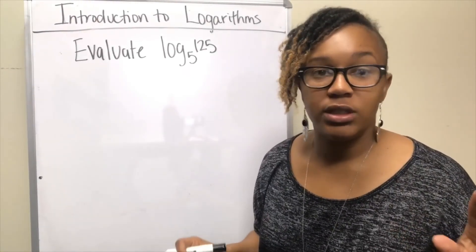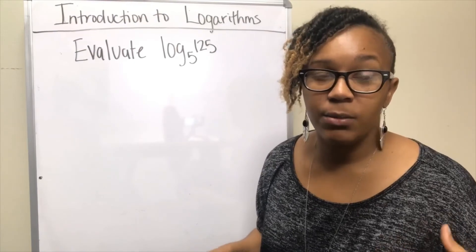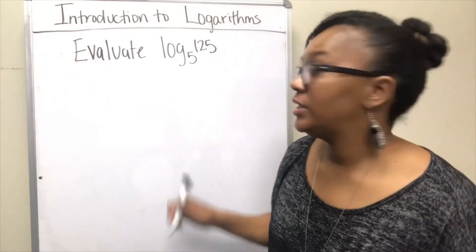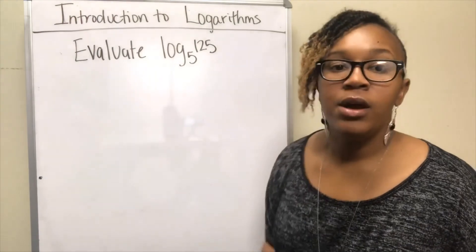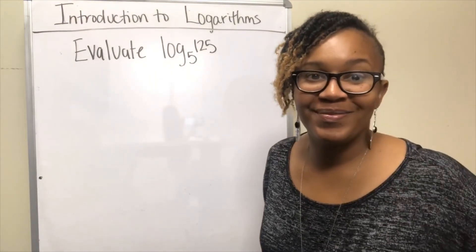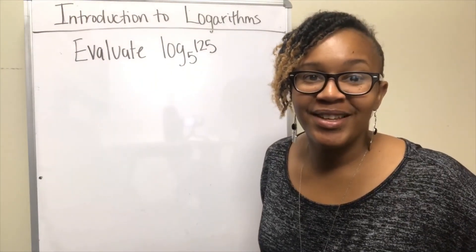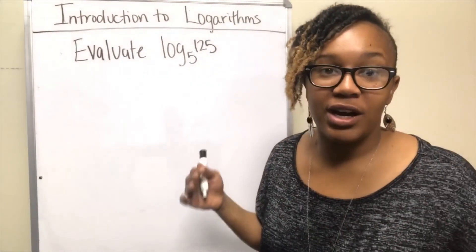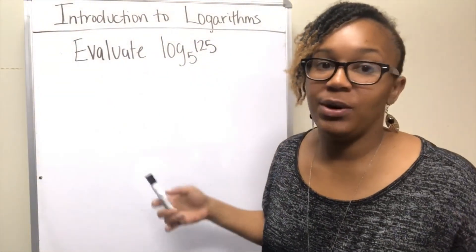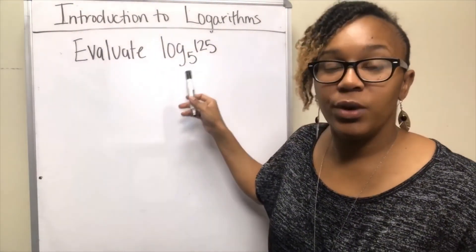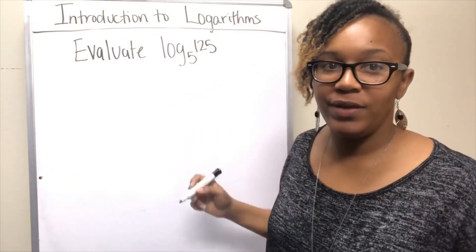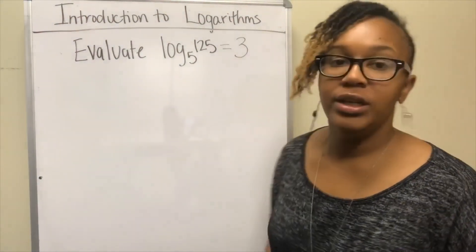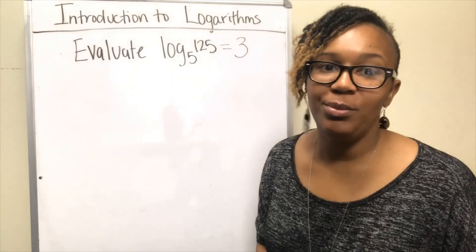I want you to try this one — pause the video for a moment and see if you can evaluate log base 5 of 125. Remember, whenever you're taking the log, you're basically trying to find the exponent. What exponent do I need to raise 5 to in order to get 125? You should have gotten 3, so 3 is your answer.